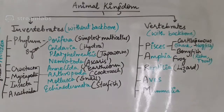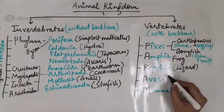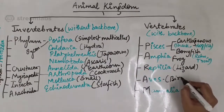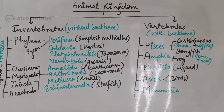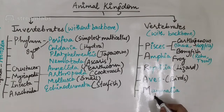Class Aves, or birds, are endothermal, meaning they are warm-blooded. They use lungs for breathing and have a four-chambered heart. Example: any kind of bird. Class Mammalia are also warm-blooded, breathe through lungs, give birth to young ones, and females have more developed mammary glands than males. Example of class Mammalia: human.